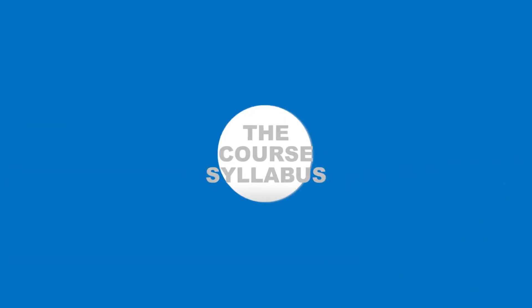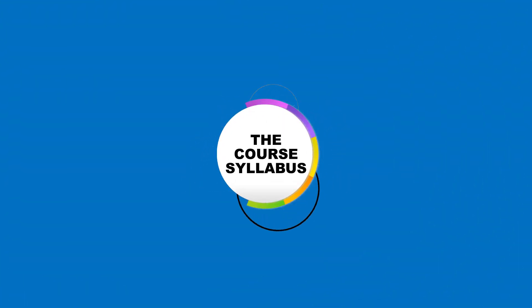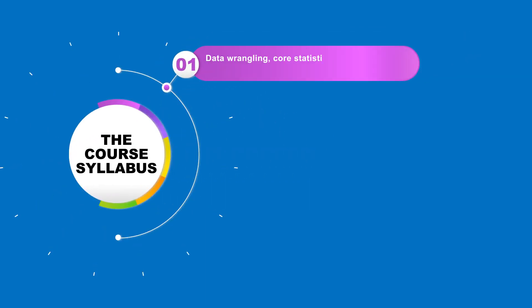This course will train you in those core competencies. Specifically, this is how the course is laid out. We start by teaching you data wrangling — the process of importing and cleaning up your data so that it can be processed later. In these early sections, we also cover a lot of core statistical and mathematical concepts, and we show you examples of how data mining is used in the wild.